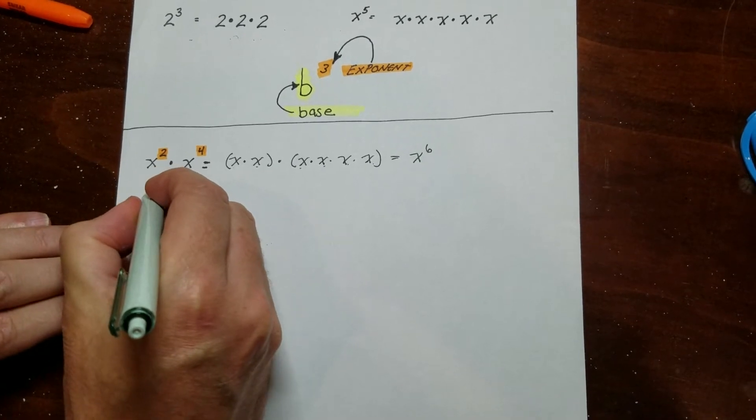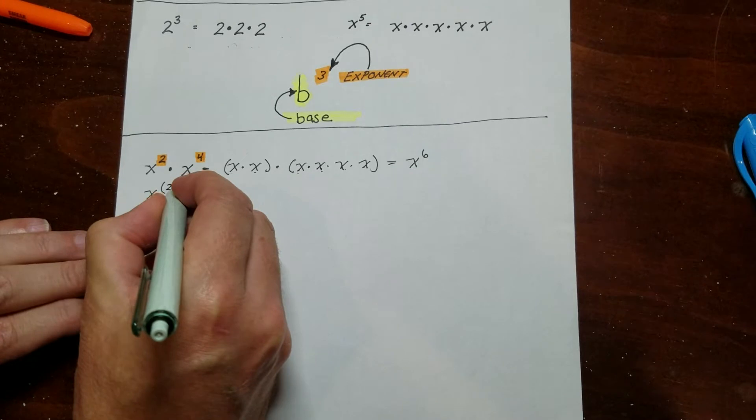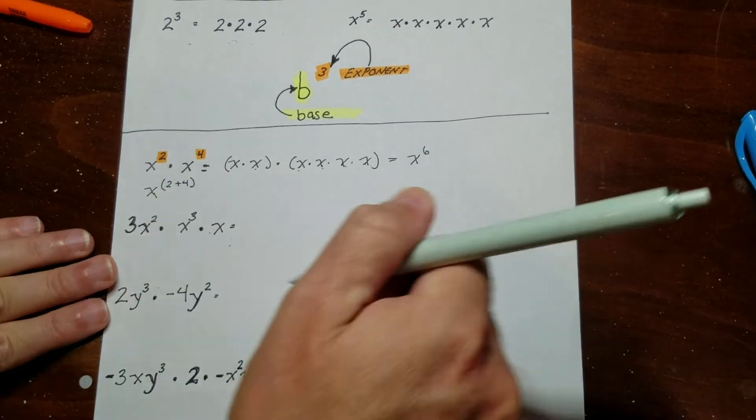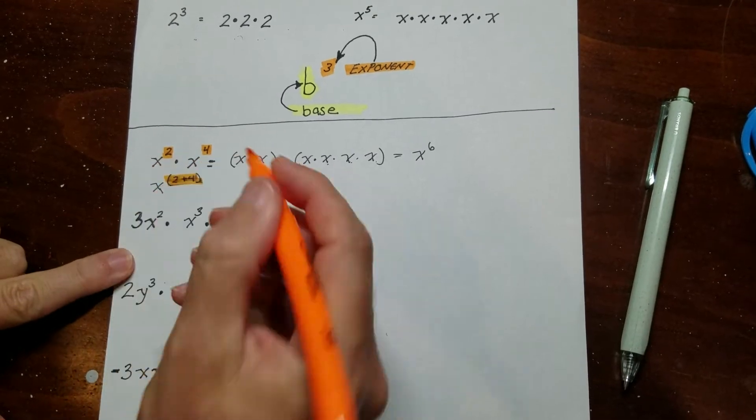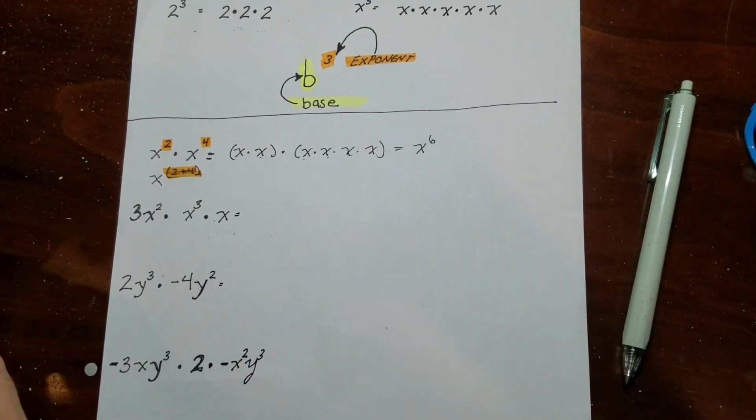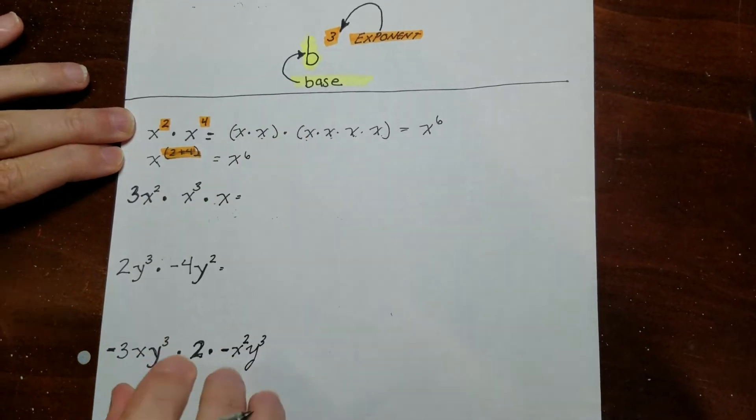Another way to look at this is as long as the base is the same, you can rewrite it where you add the exponents. And that is the multiplication rule, is that as long as the base is the same, you actually just add the exponents. So you can see I get the same thing.